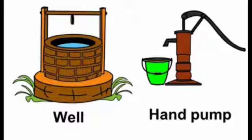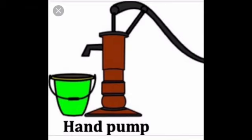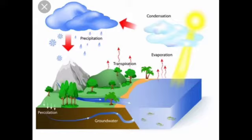Water cycle: The sun heats up the water from oceans, lakes, and rivers, and water changes into water vapor by the process of evaporation. Plants also lose water in the form of water vapor from their leaves into the air by the process of transpiration. As the water vapor rises up into the air, it starts cooling down and forms tiny droplets.